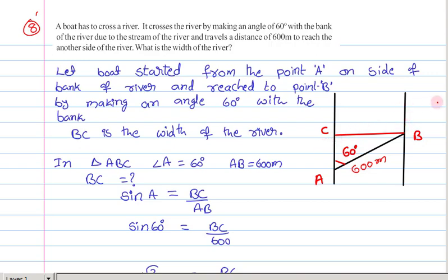This is one side and this is the other side, and I am supposing that the boat started from point A and reaches point B on the other side of the river. Then it makes 60 degrees with one side of the bank, and this boat travels 600 meters.